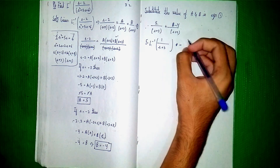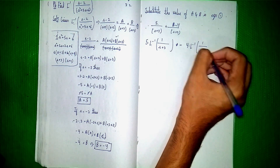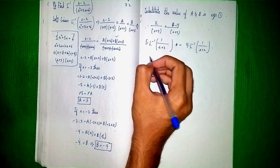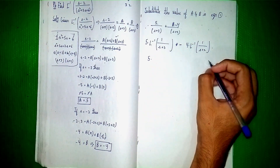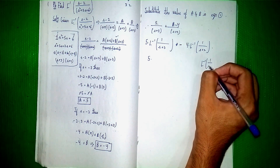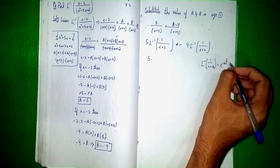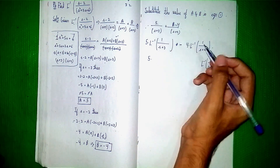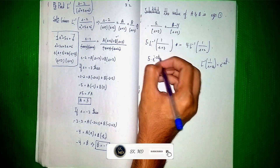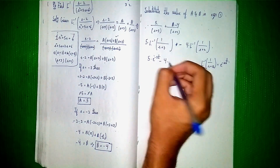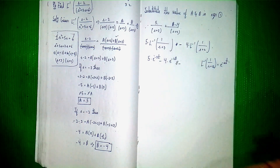Now using the standard formula: Laplace inverse of 1 by (s plus a) equals e to the power of minus at. Applying this formula: 5 times e to the power of minus 3t, minus 4 times e to the power of minus 2t. This is our final solution. Thanks for watching.